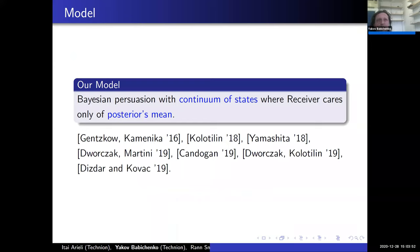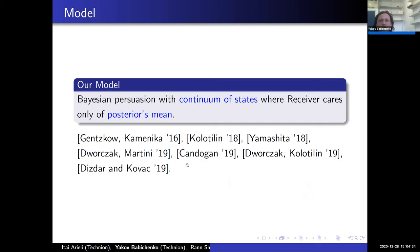I will explain each of these terms. Bayesian persuasion is essentially a strategic communication problem where the sender is allowed to commit to his signaling policy before the state is realized. Continuum states is clear. I will explain what it means that the receiver cares only about posterior means in a moment. This is not the first paper that studies this model — recently there are quite a few papers focusing on it, with Dvorak and Martini being one paper entirely about this model.